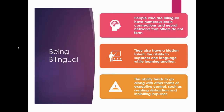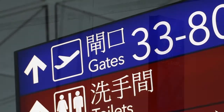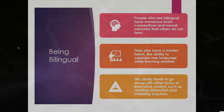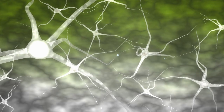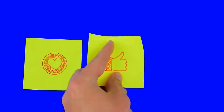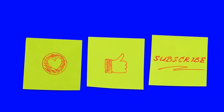Bilingual people have numerous additional brain connections and neural networks. If formed before age five, they also develop a hidden talent: the ability to suppress one language while using another, which helps in learning further languages. This ability correlates with other forms of executive control, such as resisting distraction and inhibiting impulses — making raising a child bilingual remarkably beneficial.